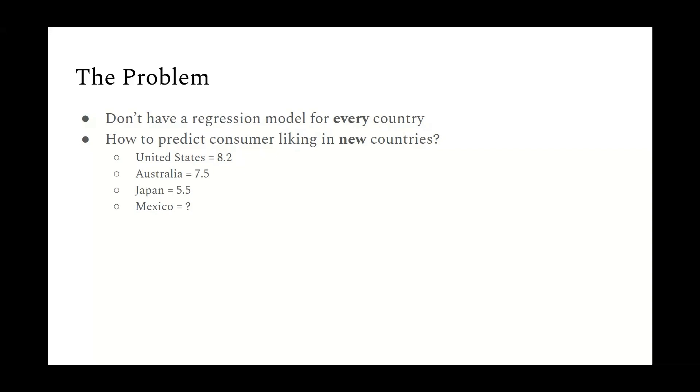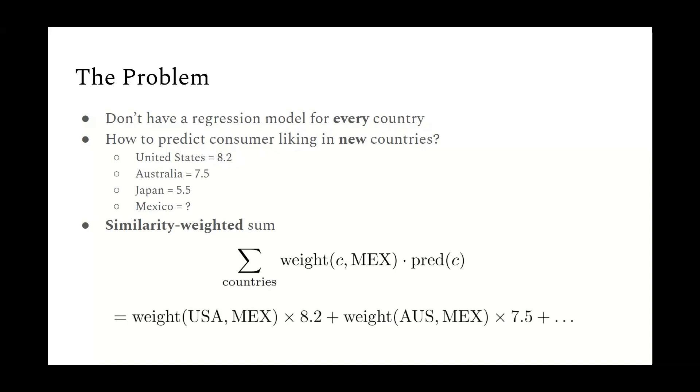Say we have a mayonnaise product, which has three regression models in the United States, Australia, and Japan, and for this new product, you predict these three liking scores. And now we have a fourth country, which is Mexico, but we don't have any regression models for Mexico. So how can we use the three models that we do have to make a prediction for Mexico? One thing you could do is you could take a simple average, or you could choose a country which is closest, so say the United States, and say that's the most representative of the Mexican market. But an even better option is to take a version of an average, which is weighted by a similarity measure.